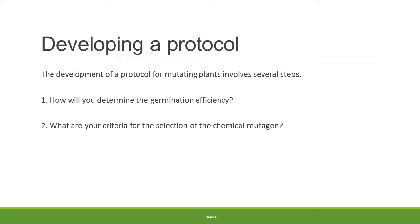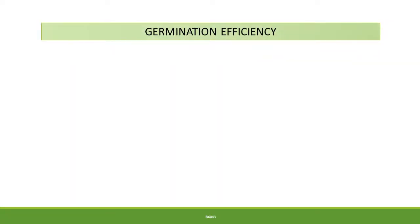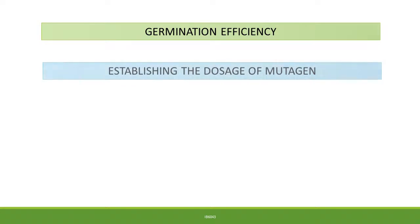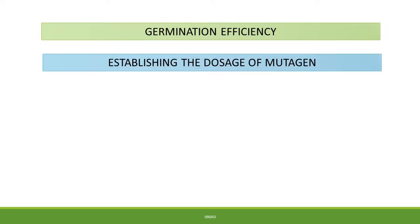Another aspect of this particular lesson is to develop a protocol. The participants need to look at two aspects: the first is to determine germination efficiency, and the second is to develop criteria for the selection of the chemical mutagen. The process of chemical mutagenesis commences with germination efficiency, to determine the number of seeds which will germinate per batch. The second aspect is to establish the dosage of the mutagen. Too high dosages can result in an increased degree of mortality, whereas too low dosages may lead to a reduction in the number of mutants.